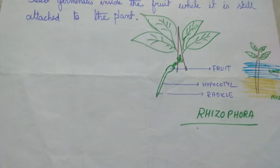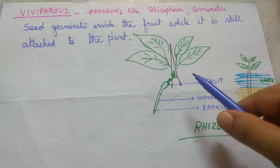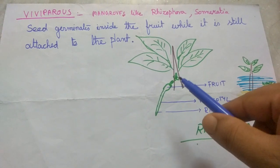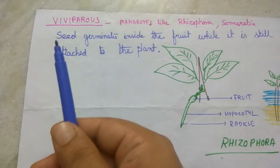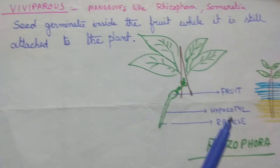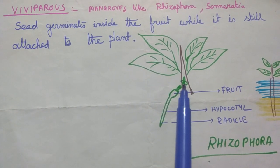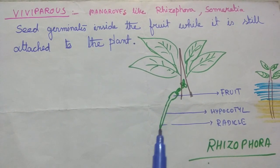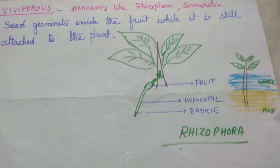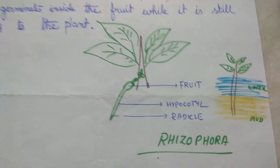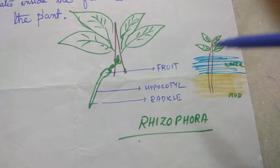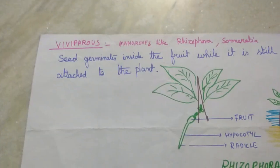Viviparous germination occurs when the germination happens while the fruit is still attached to the parent plant. This is mostly seen in mangroves like Rhizophora and Sonneratia. The fruit germinates while on the plant — the hypocotyle and radical develop — then it falls off and lands in the water. The radical gives rise to roots and the hypocotyle develops into the plant.